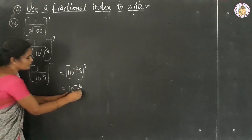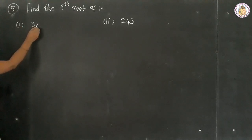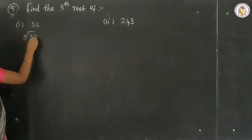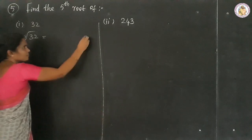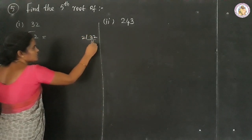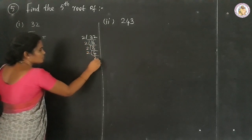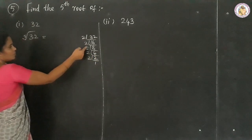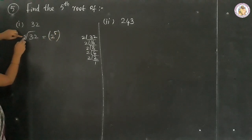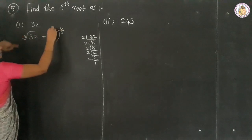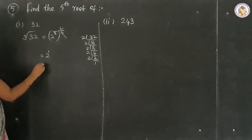Question 5: simplify. Sub-question 1: the 5th root of 32. Writing 32 as its factors — 32 equals 2 to the power of 5. So the 5th root of 32 equals (2 to the power of 5) to the power of 1 by 5. The 5s cancel, giving 2 to the power of 1, which equals 2.